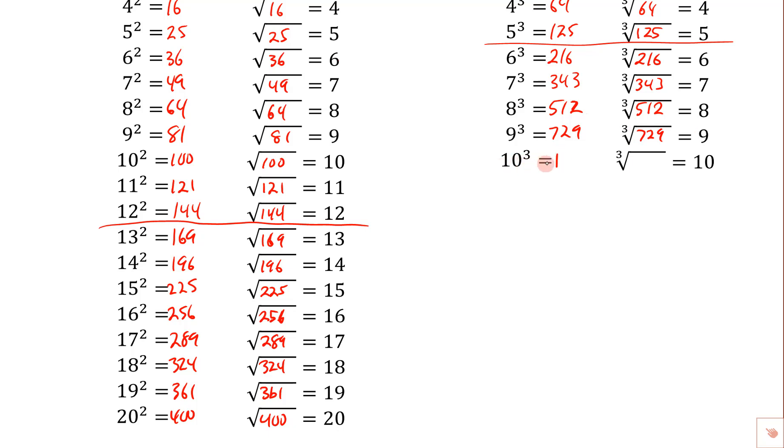10 cubed is 1,000, so the cube root of 1,000, notice those three zeros, that would mean we'd have three tens, so the answer on that one would be 10.